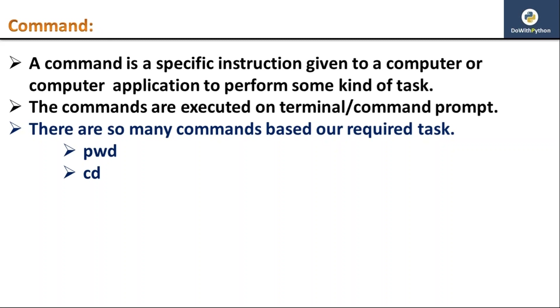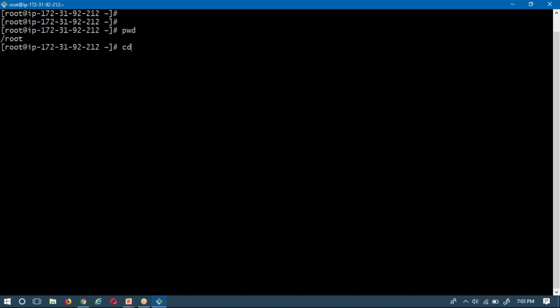The next command is cd — change directory — meaning change path. From one location to another, if you want to go, you use cd. With the help of cd you can move from one path to a different one. Suppose I am moving — first you have to provide your command, then your path. For example, opt is one of my paths on my RHL server.